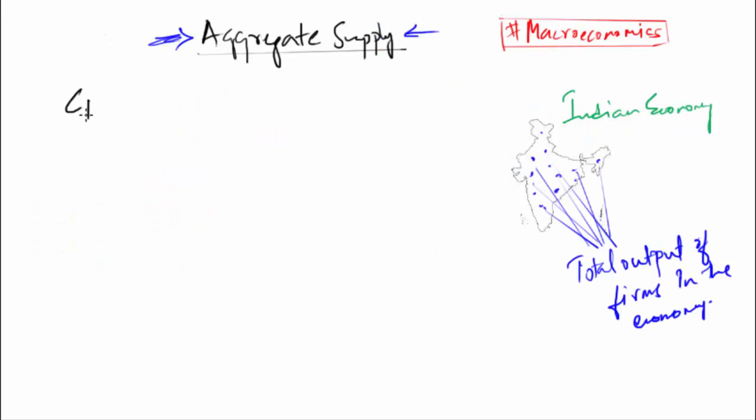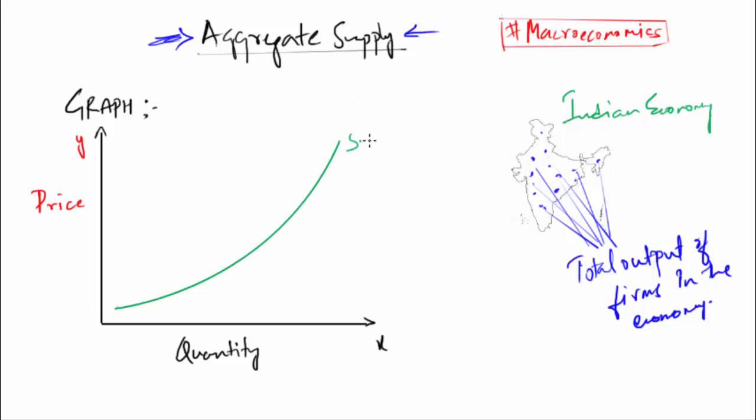If I were to plot a graph, let's make a graph. On the x-axis we have quantity and on the y-axis we have price. Now a supply curve looks upwards from left to right. Again, the meaning goes as the price of a product goes up, the supply also goes up.